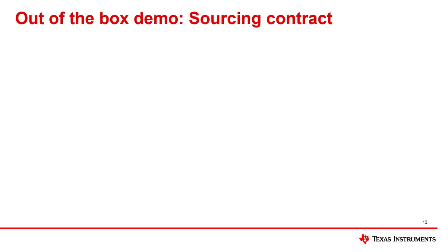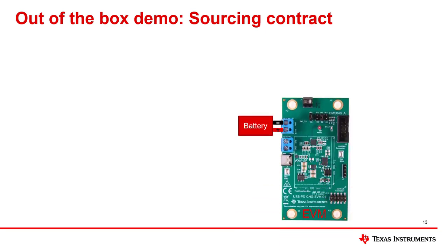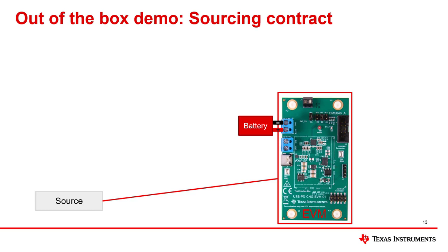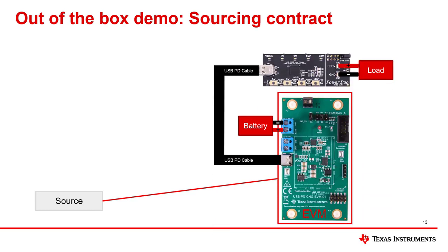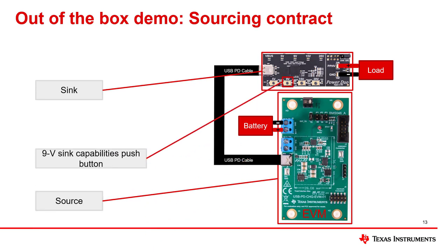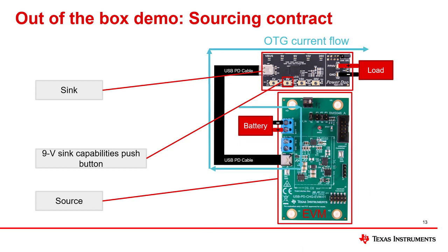Remove the battery from the board to power cycle it. Reattach the battery to power the EVM as a source. Plug in the sync board to the EVM and push the 9-volt button. Observe via the PPHV test point and the sync board that the new contract is 9 volts. Push the 20-volt button and observe that the negotiated contract remains 9 volts. Note the OTG current flow from the battery, through the EVM, through the USB PD cable, through the sync board, and through the load.